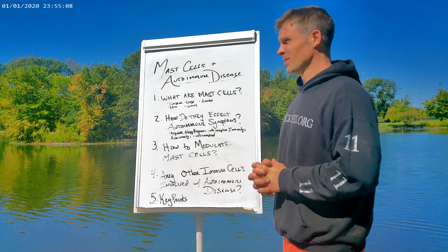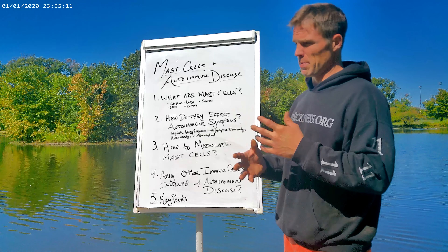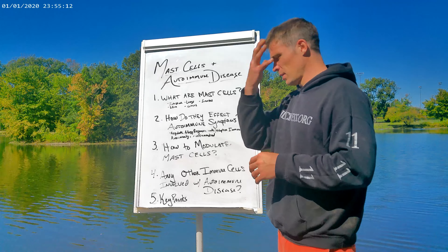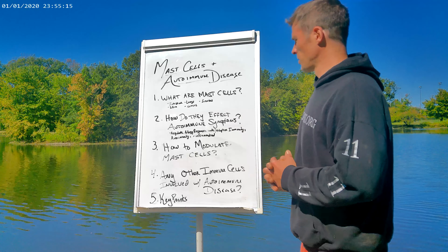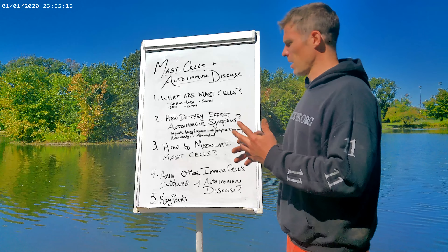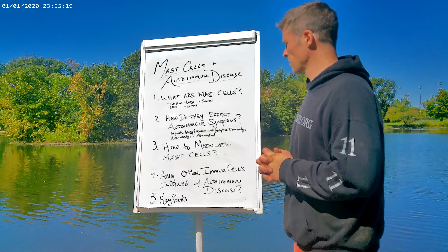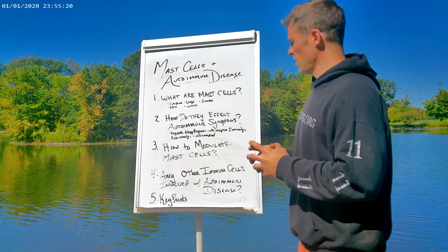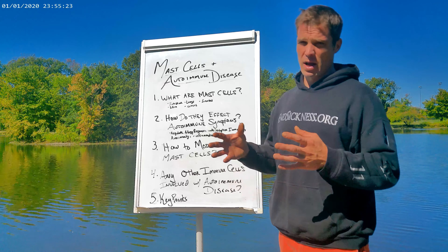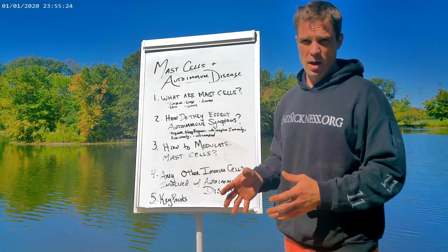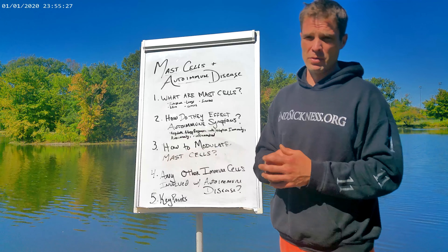Autoimmune disease typically originates from some bacterial imbalance, not only in the region near the head but also in the stomach. Once both of them are out of balance and you've got symptoms, all hell breaks loose. Mast cells are the effector cells — they're the ones that send out the inflammatory chemicals and are responsible for creating the majority of symptoms of autoimmune disease.